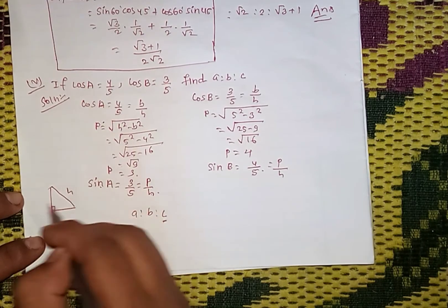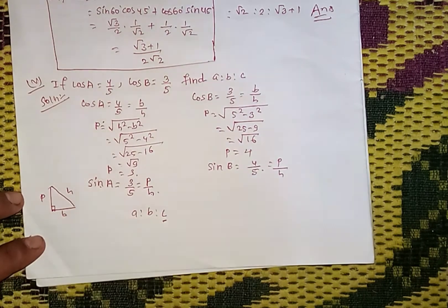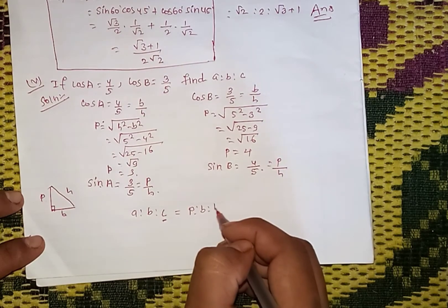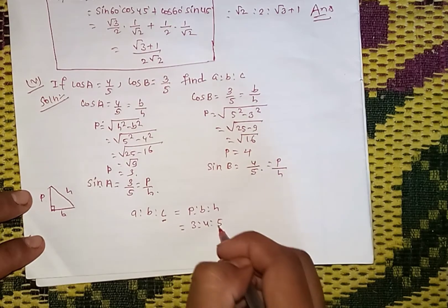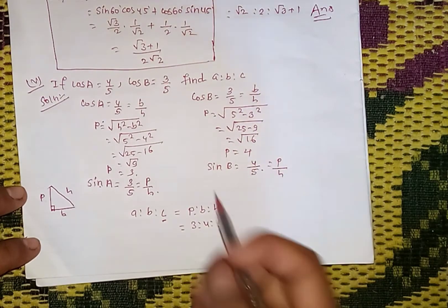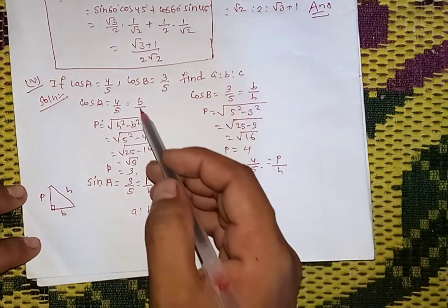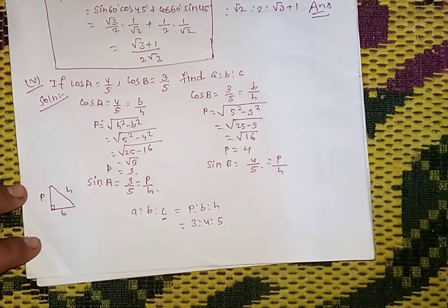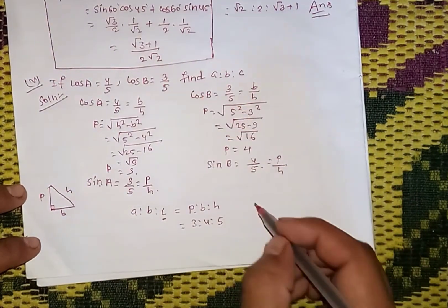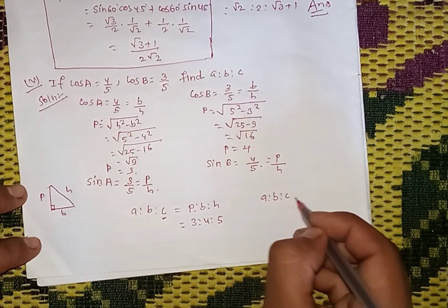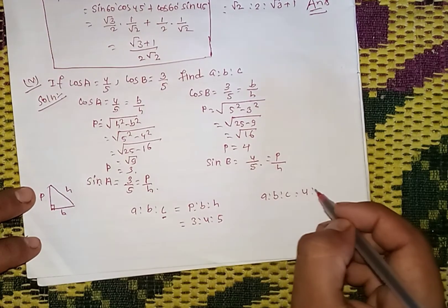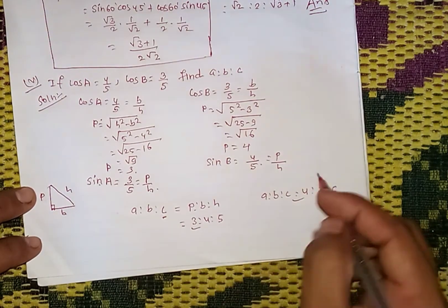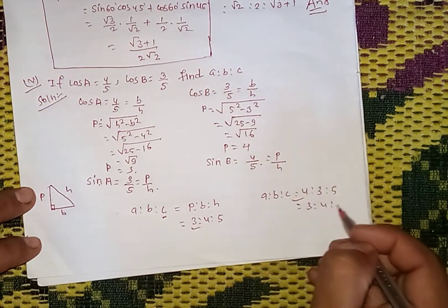In the right angle triangle, we can show the ratio. With sides 3, 4, and 5: a is to b is to c equals 3 is to 4 is to 5. Where b equals 4 and the hypotenuse equals 5. So the final ratio is 3 is to 4 is to 5.